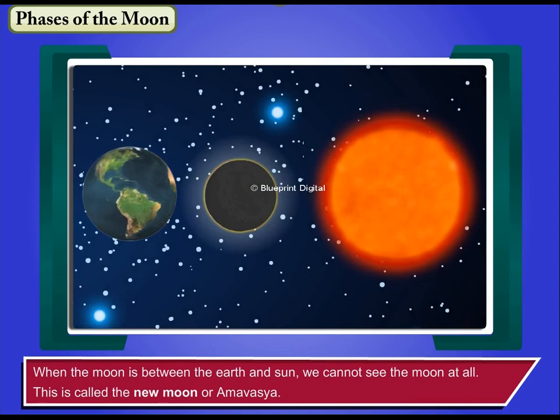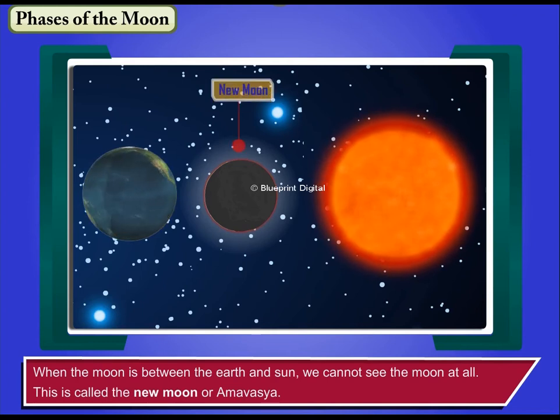When the Moon is between the Earth and Sun, we cannot see the Moon at all. This is called the New Moon or Amavasya.